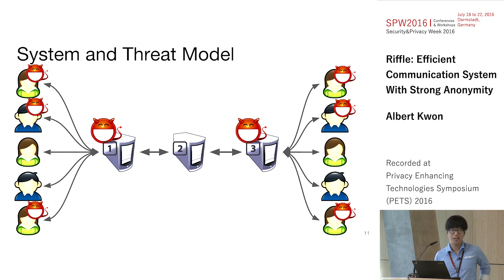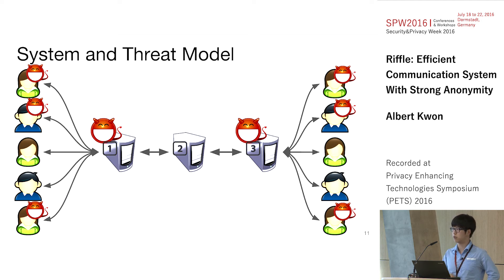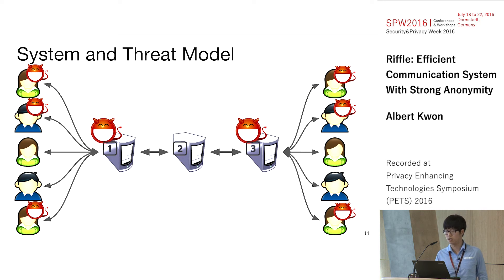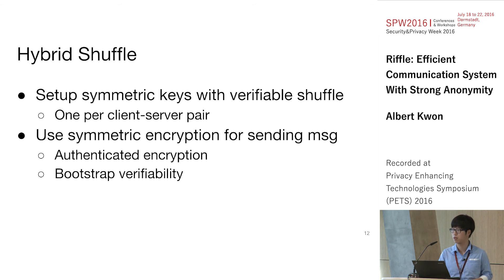One important property of Riffle is that communication is done in rounds to provide traffic analysis resistance. In every round, every client both sends and receives a message, so no client can be singled out by not uploading or not downloading something.